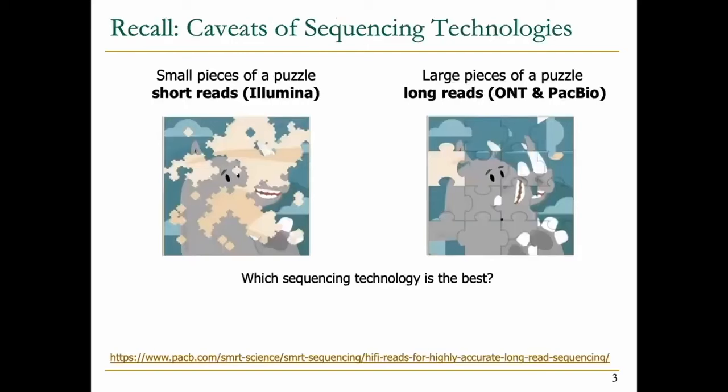Before we start, remember the caveats we previously discussed. There are certain limitations of sequencing technologies. Some technologies like Illumina produce very short reads, while third-generation sequencing technologies produce long reads. Our challenge is to solve a puzzle — either by looking at an already-solved puzzle, which would be the reference genome, or without any solved puzzle, trying to figure it out yourself, which is genome assembly.